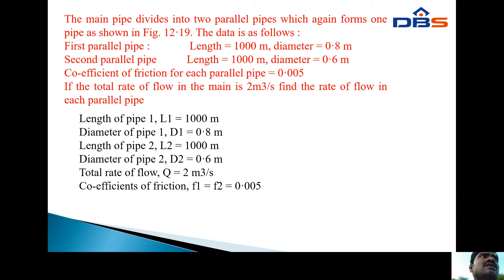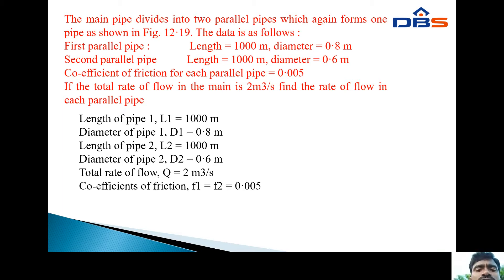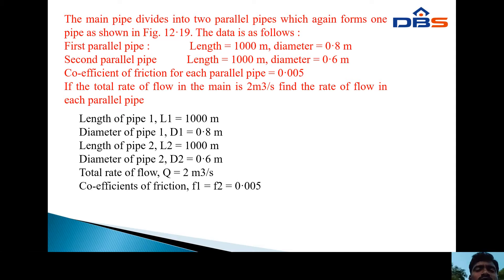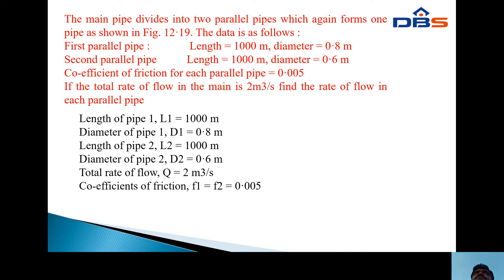This is a problem on pipes in parallel connection. The main pipe divides into two parallel pipes which again form one pipe as shown in figure 12.19. The data is as follows: first parallel pipe length L1 equals 1000 meters, diameter D1 equals 0.8 meters. Second pipe length L2 equals 1000 meters, diameter D2 equals 0.6 meters. The coefficient of friction for each parallel pipe equals 0.005. The total rate of flow in the main pipe is 2 cubic meters per second. Find the rate of flow in each parallel pipe.